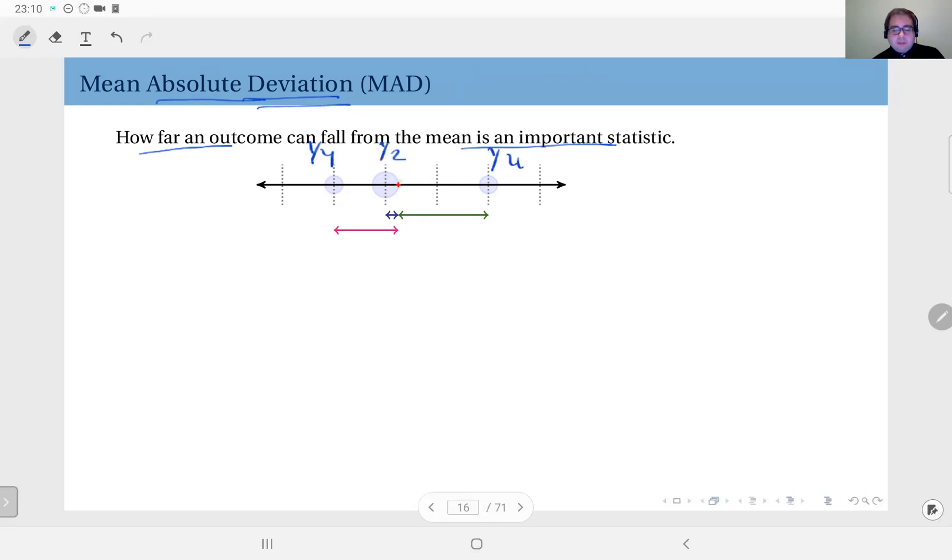And we had found out that at 2.25 we had the center of mass, the mean. So we look at how far the outcomes can be to the mean.